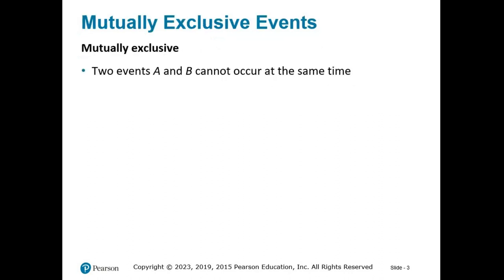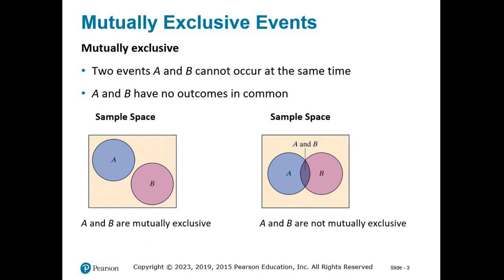Let's start with the definition. We say that two events, A and B, are mutually exclusive if they cannot occur at the same time and they have no outcomes in common. In the Venn diagram to the left, sets A and B are mutually exclusive. An example might be flipping a coin — event A could be flipping heads and event B could be flipping tails.